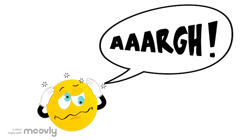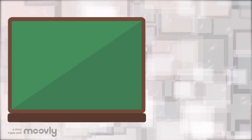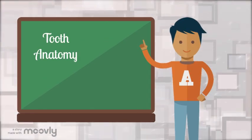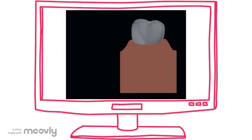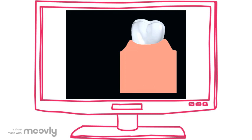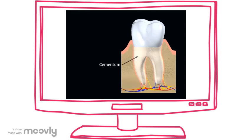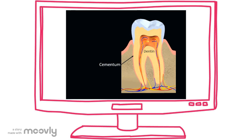To look at why dentinal hypersensitivity causes pain, we need to take a look at tooth anatomy. Looking at a single tooth, let's remove the gingiva, then remove the bone that surrounds the tooth. You should remember that the cementum covers the root, and therefore covers the dentin that is found in the root. Cutting the tooth in half, you see the yellow dentin, but also the very thin layer of cementum that covers this dentin.